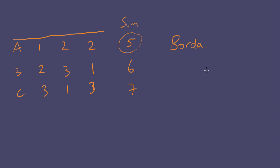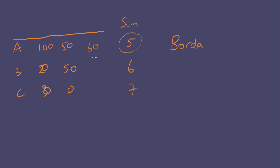The Borda count is spelled B-O-R-D-A. There are other methods you could use. You could say to people: you don't have to assign numbers 1, 2, 3 — we'll give you 100 points and you can distribute them however you like. So you might give 100 to one option and zero to the others, or indicate indifference between two options and dislike of a third by going 50, 50, zero, or show how close a call it is by voting something like 41, 30, 29. All of these methods will avoid the problem of the Condorcet paradoxical preferences.